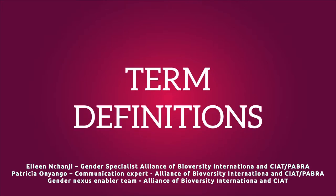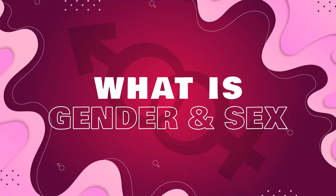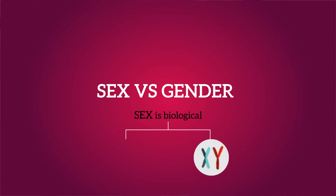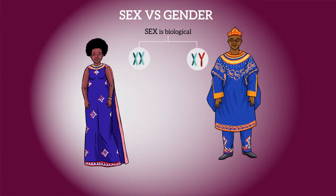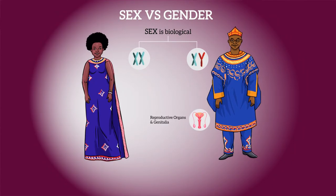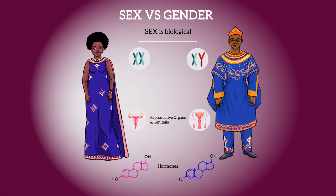We will begin with term definitions to help us understand key gender concepts. What is gender and sex? Sex could either be male or female. It is biologically defined as genetically acquired differences between males and females. It defines males and females independently of each other. The definition is universal.